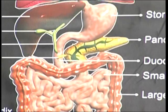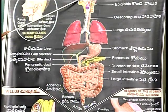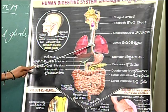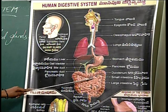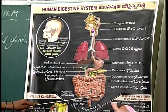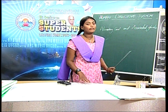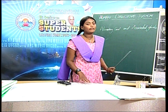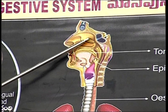Between the mouth and anus, some organs are present. They are the buccal cavity, pharynx, esophagus, stomach, small intestine and large intestine. Let me know in detail about the first part of the alimentary canal, the buccal cavity.